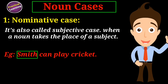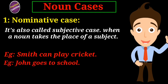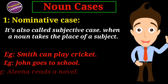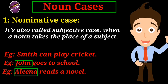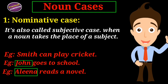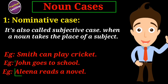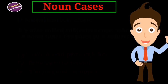There are many examples, like 'John goes to school' and 'Alina reads a novel.' Here, John and Alina are nominative cases of a noun because they have taken the place of a subject.